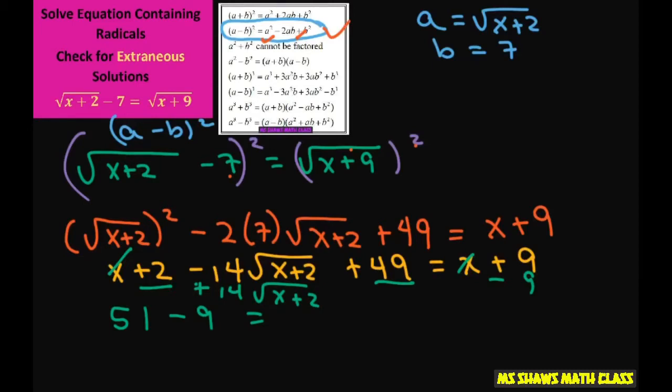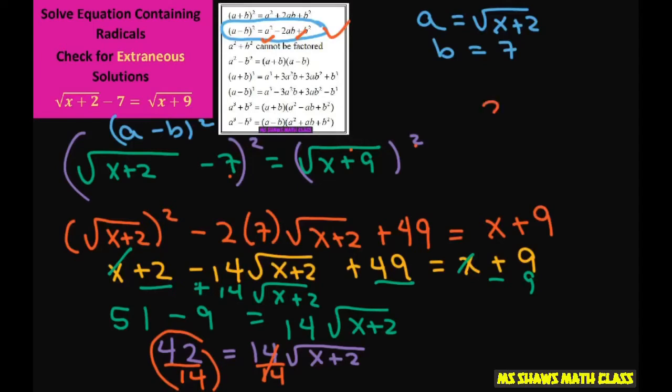So I'm going to get 14 times square root of x plus 2. That way I got rid of my negatives. Now 51 minus 9 is 42 equals 14 times square root of x plus 2. If you divide both sides by 14, that's going to give you 3 here. So what we have is 3 equals square root of x plus 2.